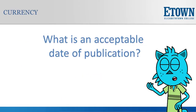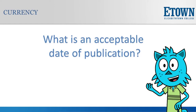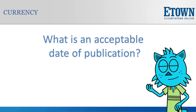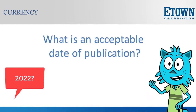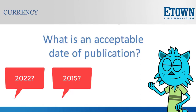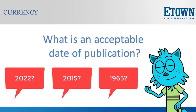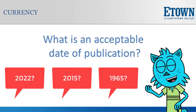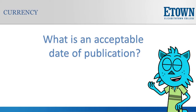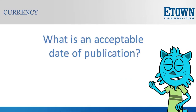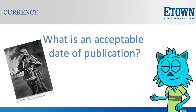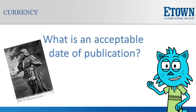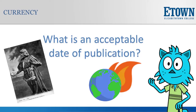Currency refers to when the source was published. So what is an acceptable date of publication? The answer varies widely — it depends upon the discipline and the topic. Acceptable publication dates for resources on a topic like Shakespeare's play Hamlet will be different from scientific research on climate change.